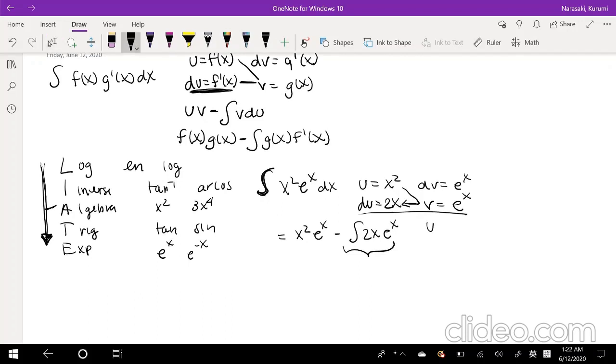So again, we're going to set u equals 2x. Du is just going to be that coefficient 2. Dv is e to the x. V is just e to the x. Again, we're going to multiply across, minus the integration across this way.